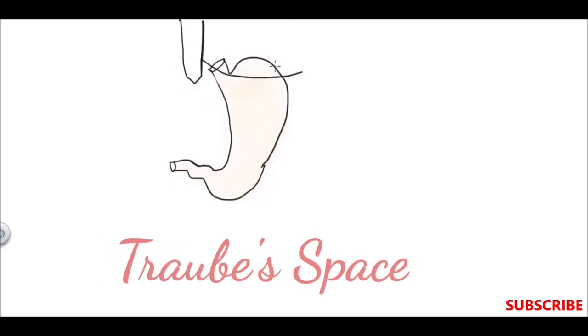Let us see about Traube's space and the gastric triangle related to the stomach. This is the left costal margin by the 7th to 10th ribs, and here to the stomach there is the liver, inferior border of the liver, and the right costal margin.